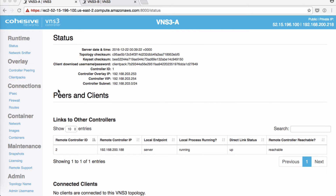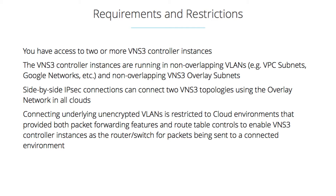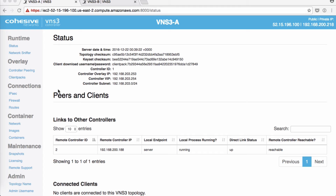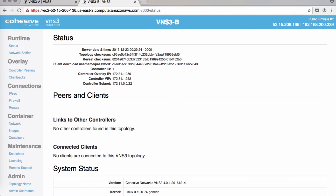Hello and welcome. Today we'll be doing side-by-side VNS3 controllers. We'll start with two running VNS3 controllers in different subnets. VNS3A is in subnet 192 and VNS3B is in 172 to keep them clear.